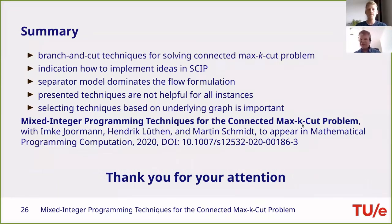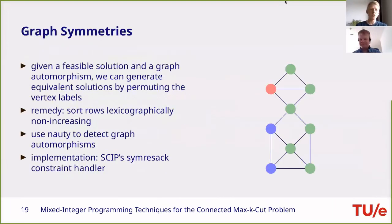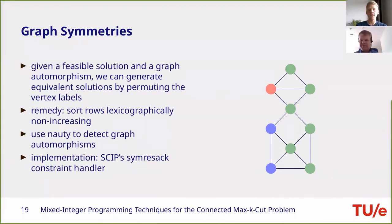There is a question in the chat: can Bliss help with symmetry handling? Bliss can in principle also help — it would be another method for finding graph automorphisms, similar to Nauty. However, to handle those automorphisms in SCIP, you still need SCIP's built-in features such as the symmetry set constraint handler. Detecting symmetry is not the bottleneck — it can typically be done in fractions of a second.